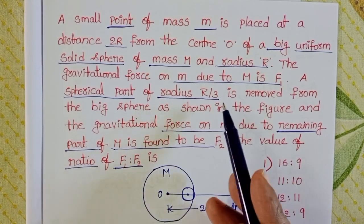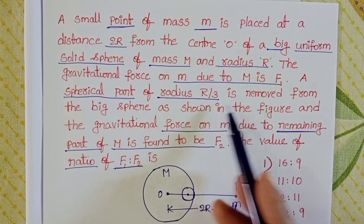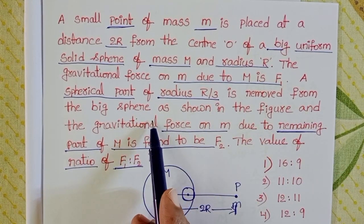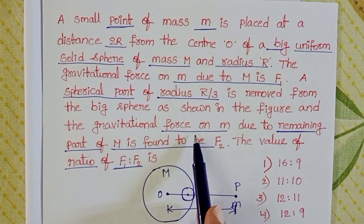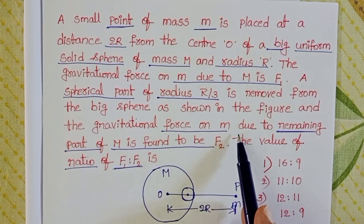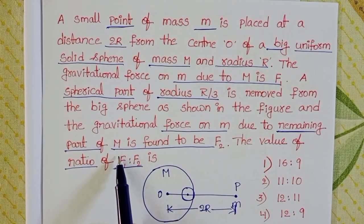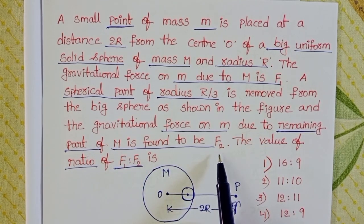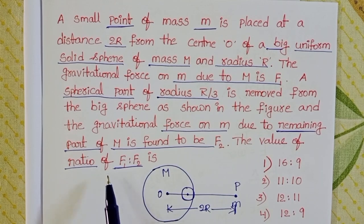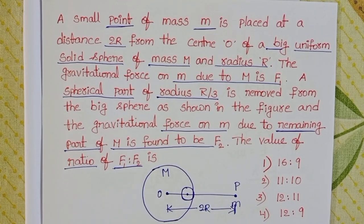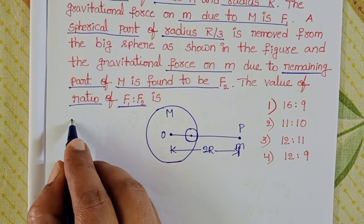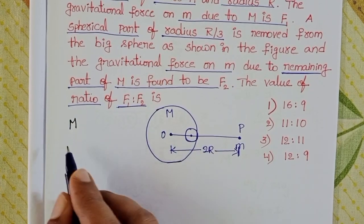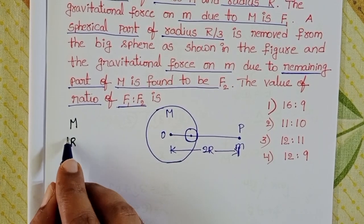A spherical part of radius R/3 is removed from the big sphere as shown in the figure. The gravitational force on small m due to the remaining part of M is found to be F2. We have a solid sphere of mass M and radius R.